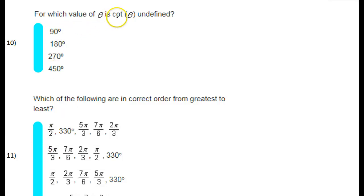For which value of theta is cotangent theta undefined? We have to start with the fact that cotangent is the reciprocal of tangent. Tangent is sine over cosine. That's one way to think of it.